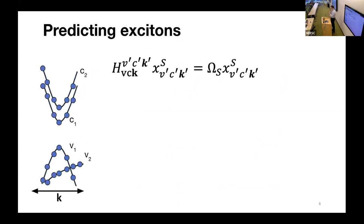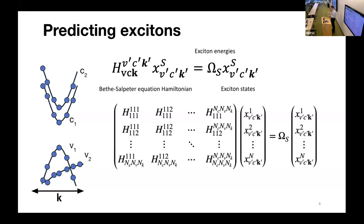We can cast the exciton problem as an eigenvalue equation. We have some Hamiltonian H, which is known as the Bethe-Salpeter equation Hamiltonian. If we diagonalize this Hamiltonian, we get our exciton energies as the eigenvalues and our exciton states as the eigenfunctions. This Hamiltonian is a dense matrix made up of interactions among all of our electron-hole pairs in our system.